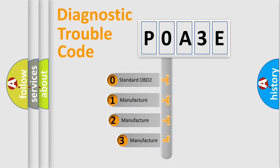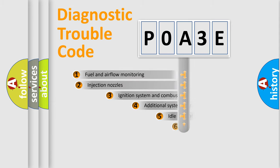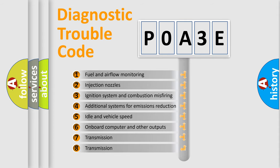If the second character is expressed as zero, it is a standardized error. In the case of numbers 1, 2, 3, it is a manufacturer-specific expression of the car-specific error. The third character specifies a subset of errors.